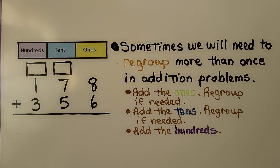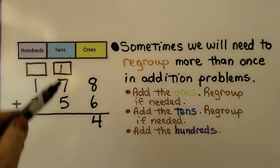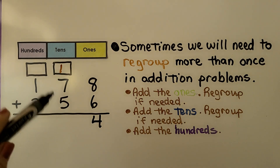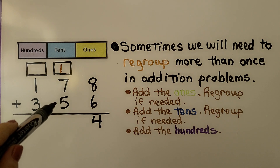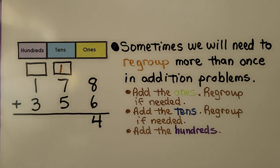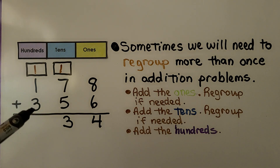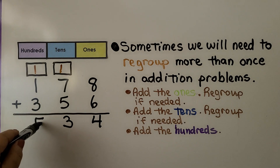Sometimes we will need to regroup more than once in addition problems. Here we have one hundred seventy-eight plus three hundred fifty-six. We start with the ones place. Eight plus six is equal to fourteen. Fourteen is one ten, four ones — we regroup the ten. Now we add the tens and regroup if needed: seven plus five is twelve, plus the one regrouped is thirteen. We regroup ten tens as a hundred and write the three in the tens place. Now we add the hundreds: three, four, five — it's equal to five hundred thirty-four.